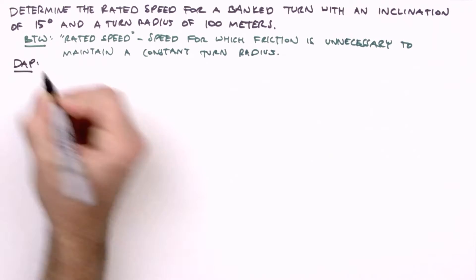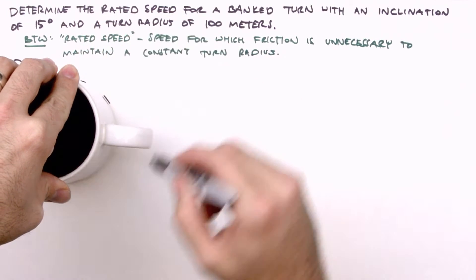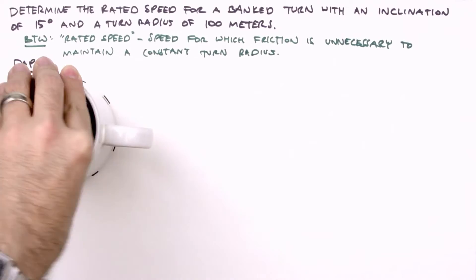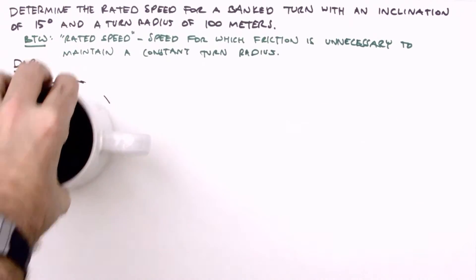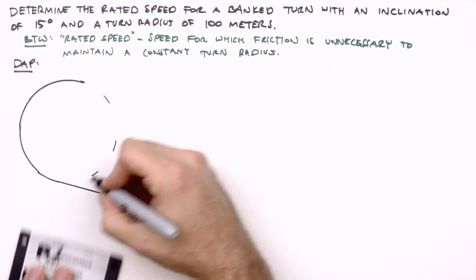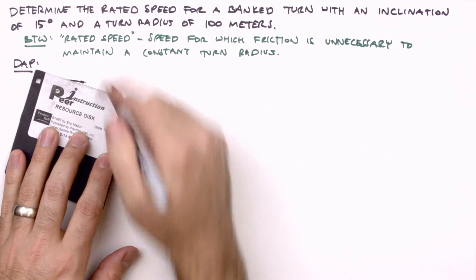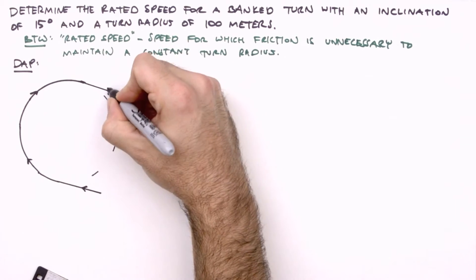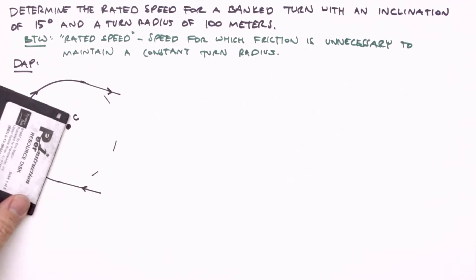As always, we begin by drawing a picture. Our picture will show the turn as viewed from above. We'll use our coffee mug here to make sure it looks nice and circular. Why is our turn circular? Because the given radius is constant. To make this a little more realistic, we'll depict our vehicle entering this turn from a straightaway and exiting the turn to a straightaway. Here we'll mark the center of the turn, C, and label the radius of the turn, R. Finally, we'll draw our vehicle in mid-turn.